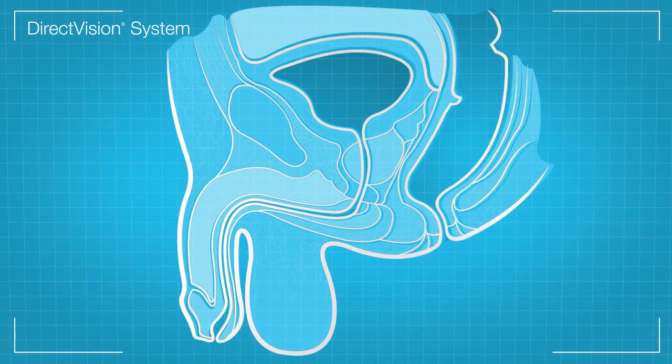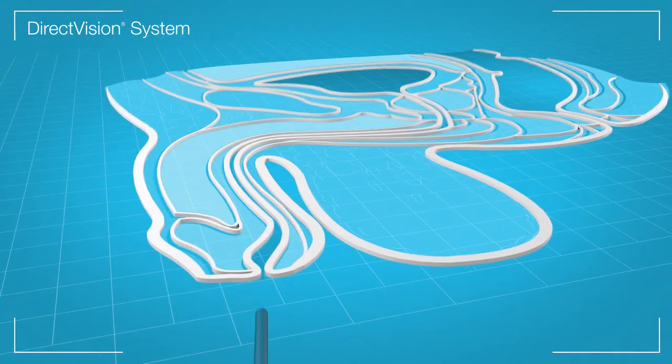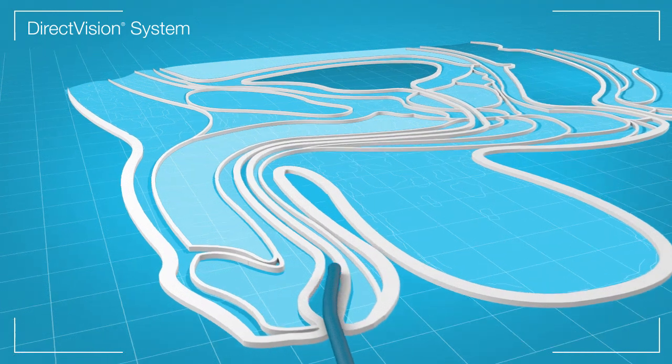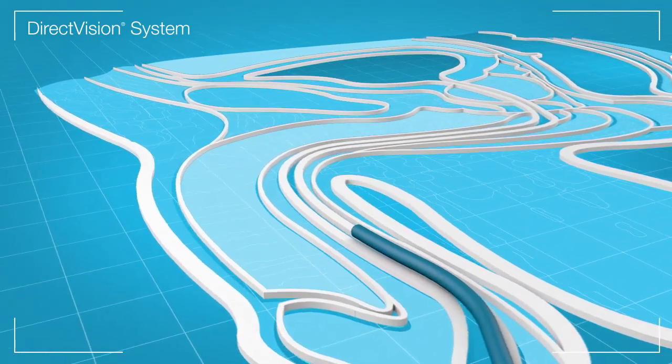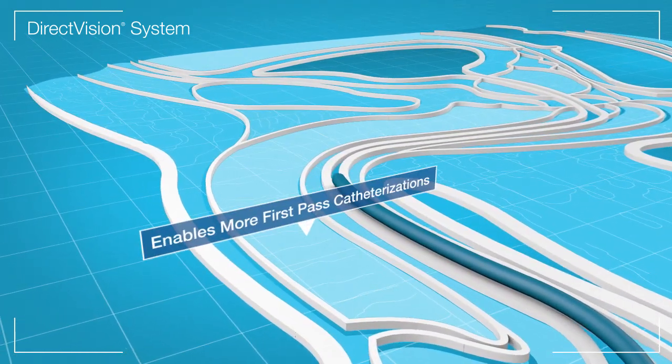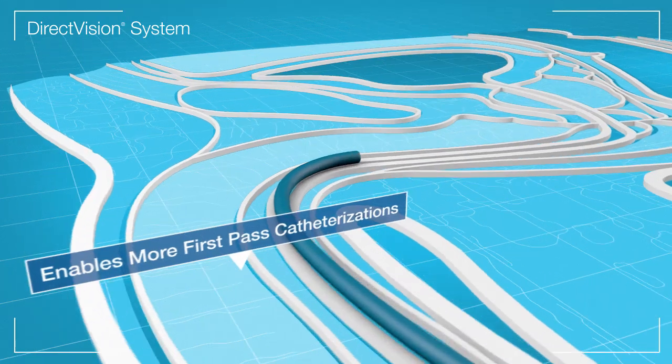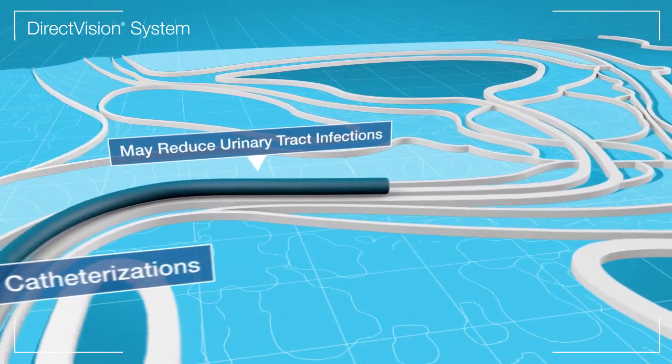The DirectVision system removes guesswork from urinary catheter placement. The visually guided catheterization enables more first pass catheterizations which may reduce urinary tract infections.